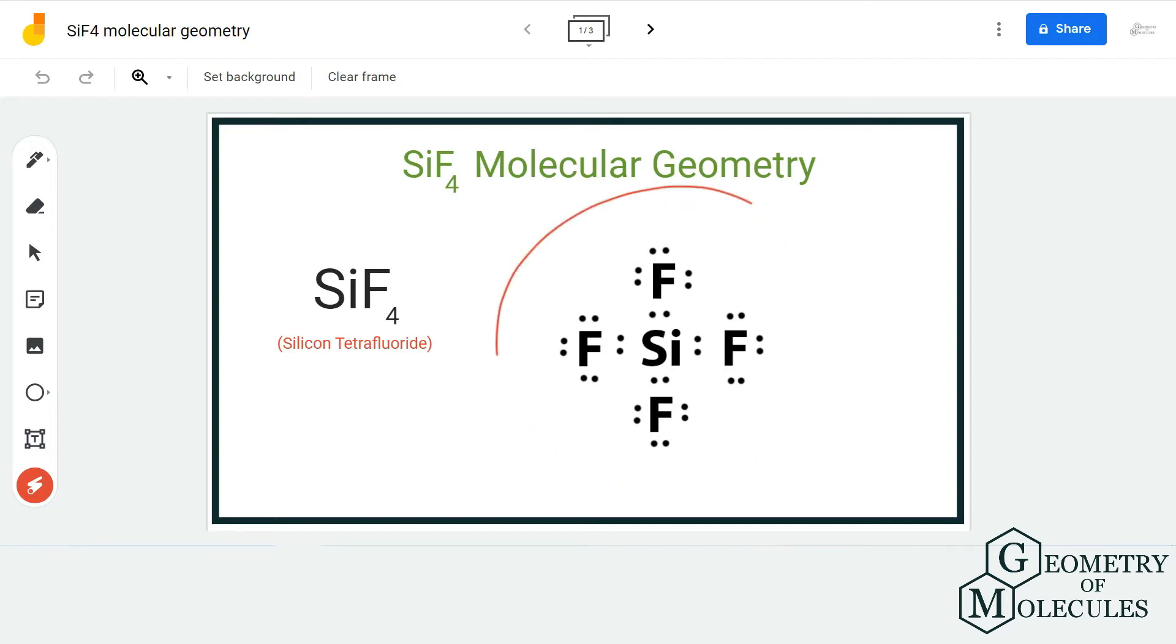going to look at its Lewis structure. So this is the Lewis structure of SiF4, in which the silicon atom is in the center and it is forming four single bonds with four fluorine atoms. Now to understand the molecular geometry